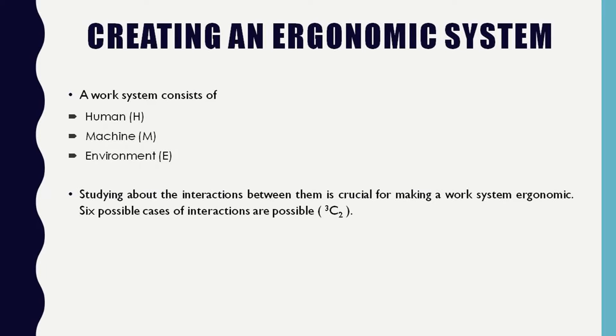After discussing FPJ and FJP philosophies, we will understand an ergonomic system and its components. An ergonomic system is composed of interaction among human, machine, and environment. The work system consists of these three entities, and based on their combination, six directional interactions are possible.